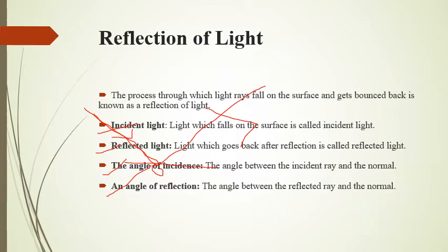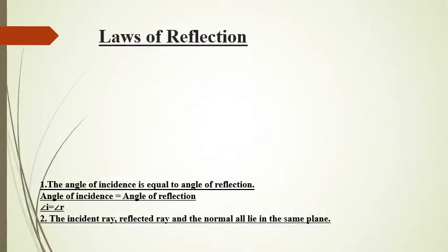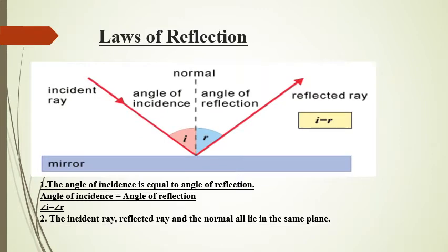Now let's discuss reflection of light, angle of incidence, and angle of reflection in detail with the help of a diagram. First, what are incident rays? This is our plane mirror. Suppose this is our sun — a light source — and the rays coming from the light source to the mirror are called incident rays. After reflection at point O, the rays in the same medium are called reflected rays.